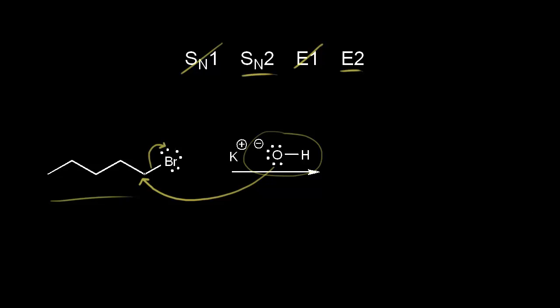Our carbon in red is this one, so let's draw out the carbon chain: one, two, three, four, five carbons, and this carbon is the one in red. Attached to the carbon in red is going to be our OH. So we're going to form an alcohol from this SN2 reaction.